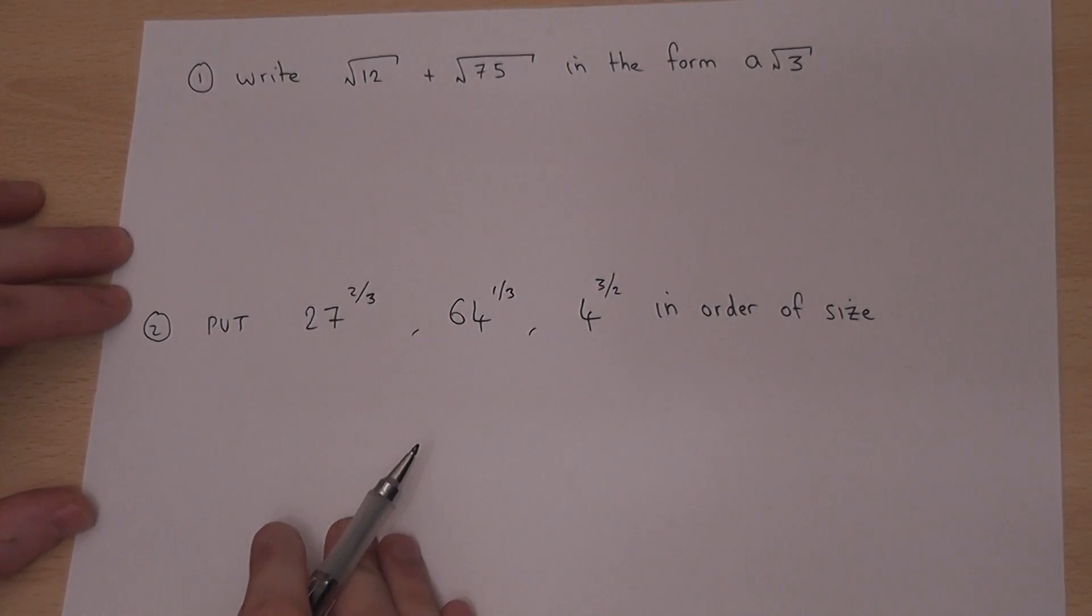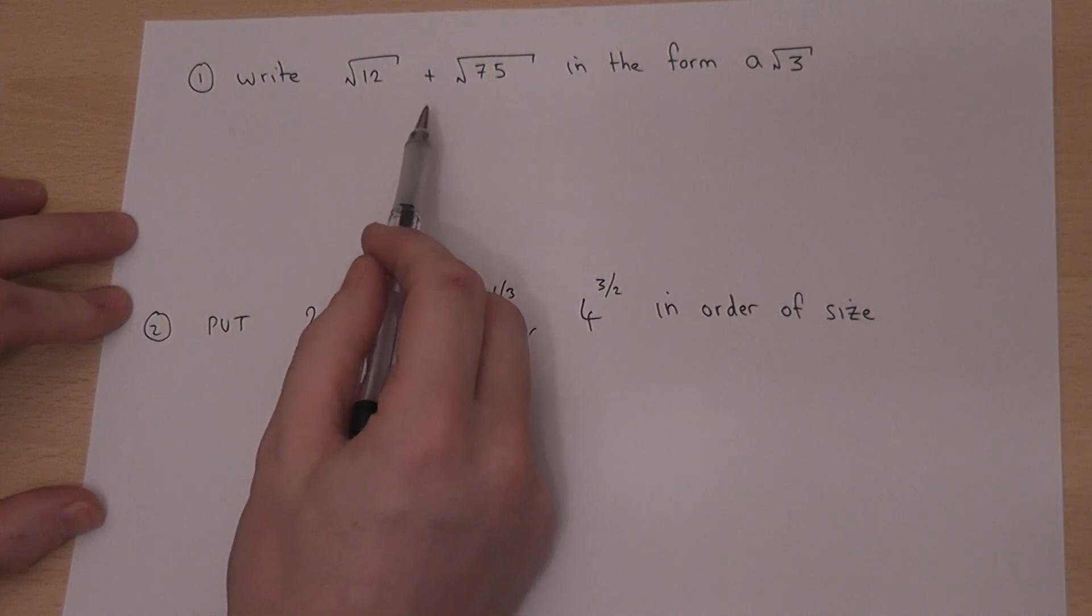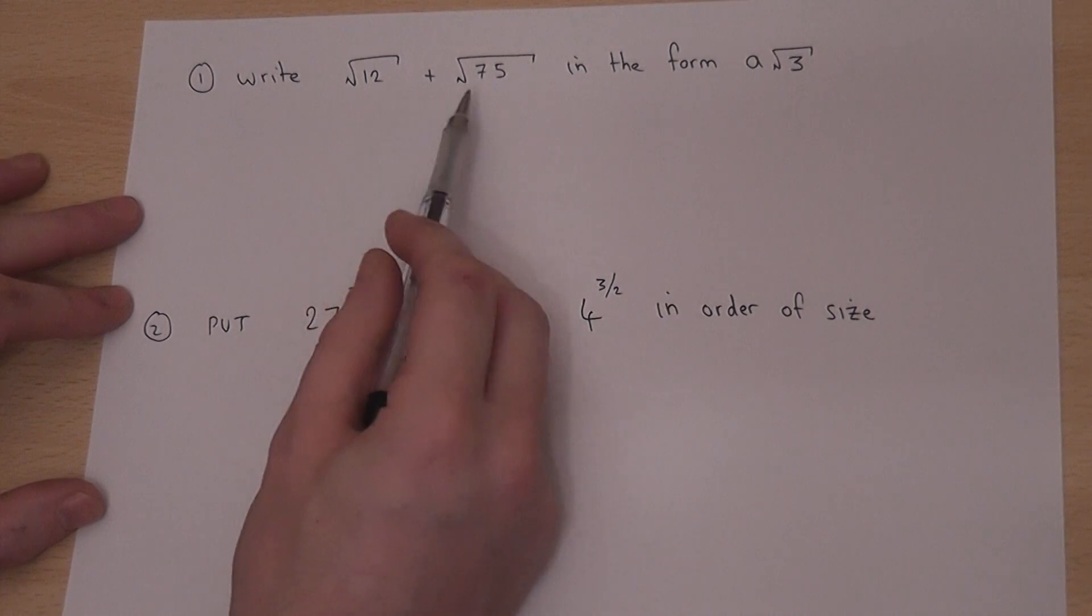This video looks at two different types of power questions. The first one looks at thirds, and we're asked to add together two different thirds. Now the trick to add thirds is to try to simplify the thirds first.